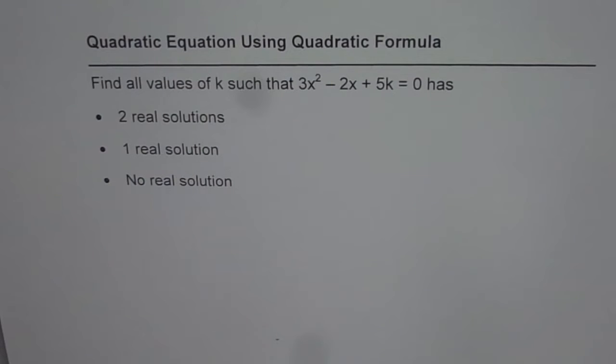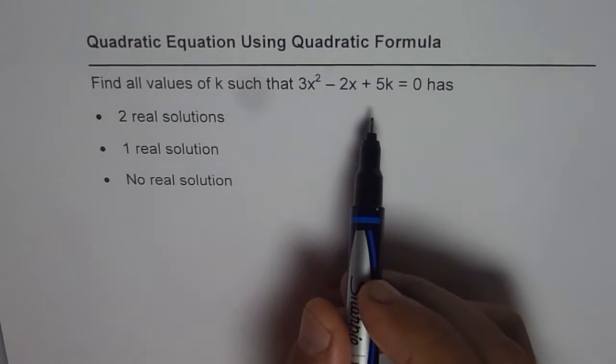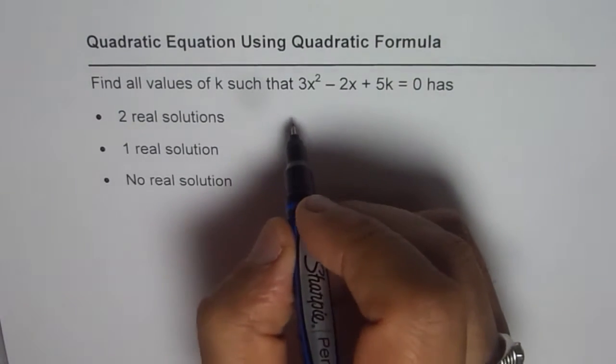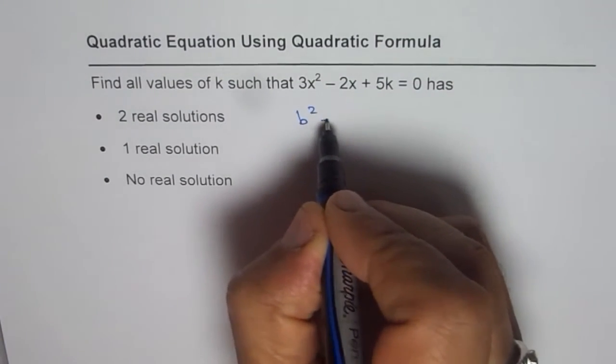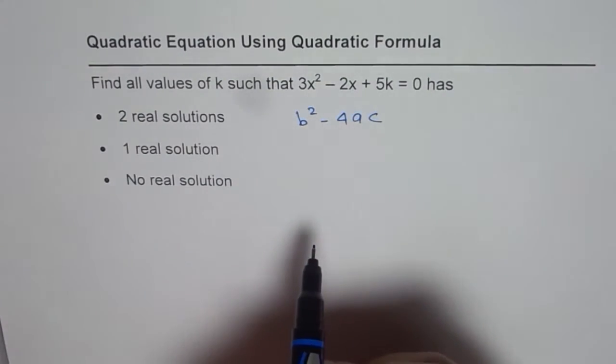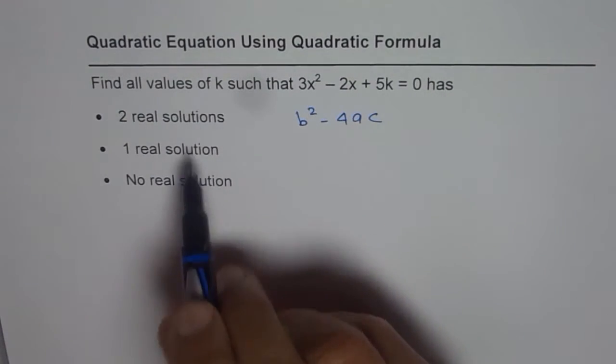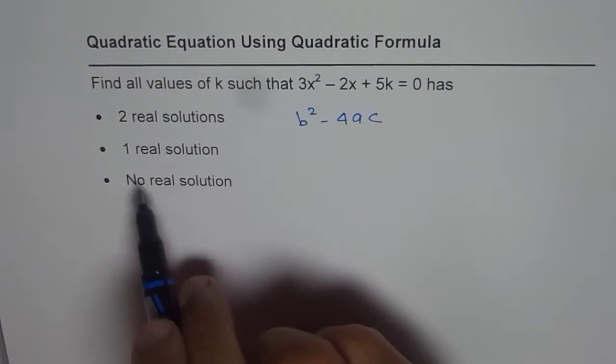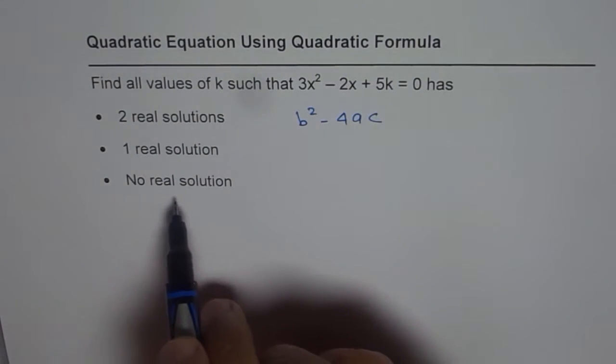You can pause the video and answer the question then look into my suggestion. Now to find the value of k, we should calculate the value of discriminant b² - 4ac. Depending on the value of b² - 4ac we can decide what value of k will give us 2 real solutions, 1 real solution, and no real solution.